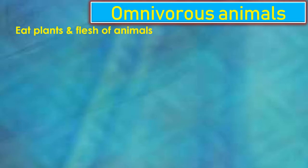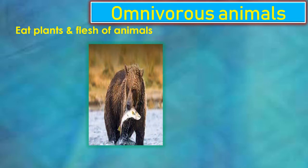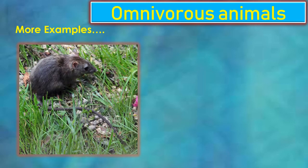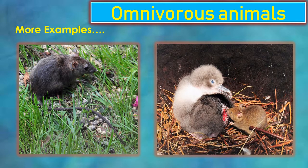Let us see about omnivorous animals. They eat plants and flesh of other animals. For example, bear eating fish and bear also eating grass. One more example of an omnivorous animal is rat. Rat eats grass as well as flesh.